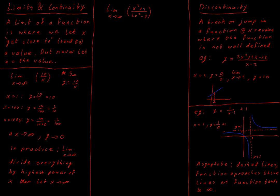So the limit as x tends to infinity of x squared plus 1 all over 2x minus 3. Let's follow our guidance: divide everything by the highest power of x. The highest power of x we've got here is x squared, so divide every single term by x squared. We're dividing above and below the line by the same amount, so we are not changing our function.